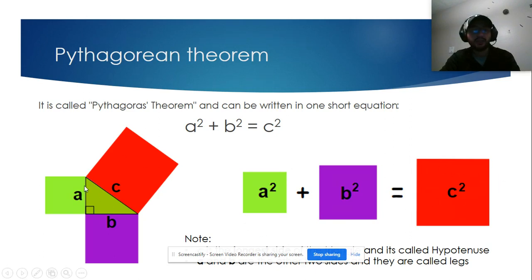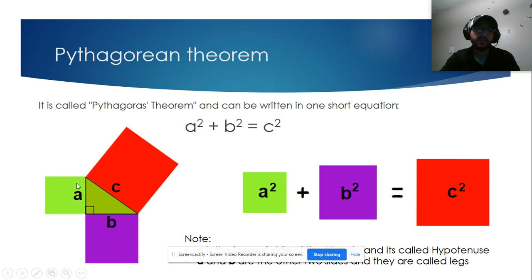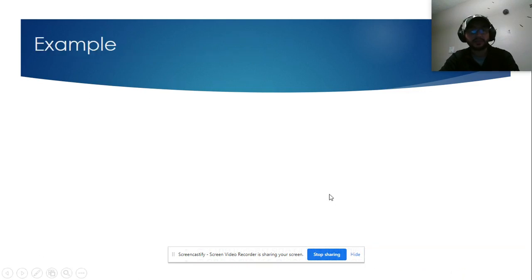Note that the bigger side will always be labeled letter c, and we call it the hypotenuse. The two smaller sides can be either a or b — the order doesn't matter — and we call them legs.